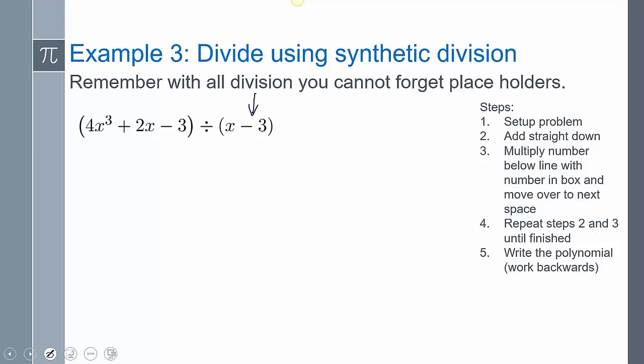Next one, set it equal to zero, so I get three. Four, I don't have an x squared placeholder, two, and then negative three. I know some of us probably forgot to do that placeholder. We gotta write that placeholder. So add straight down, multiply, add straight down, multiply, add straight down, multiply. Let's see, that is 120 minus six, add straight down.